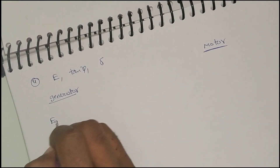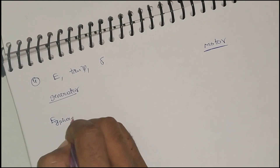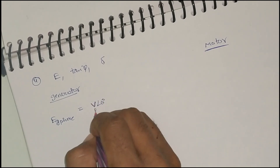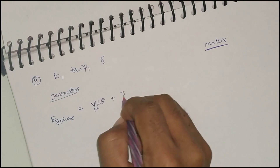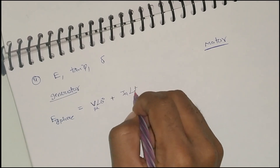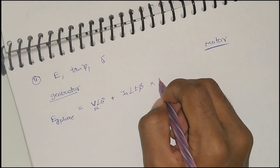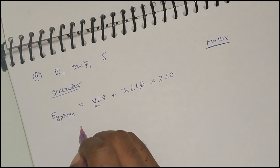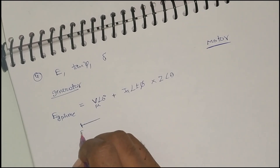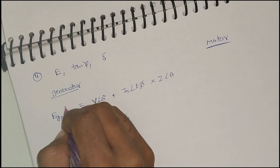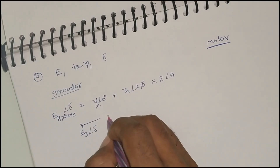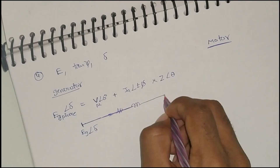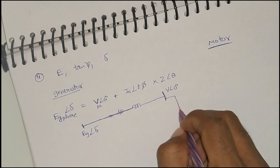For generator, the generated EMF per phase is equal to V at an angle 0 (this is also phase) plus I_a at an angle plus or minus phi, into Z at an angle theta. So the generated EMF is at an angle delta. The load angle delta — here some resistance and some reactance are there, you get an angle zero degrees, and this is the load connected.